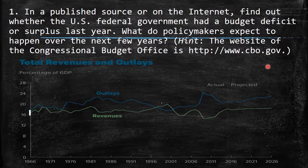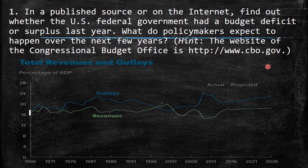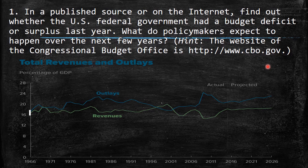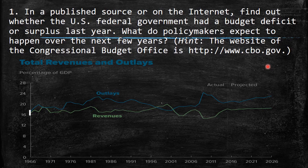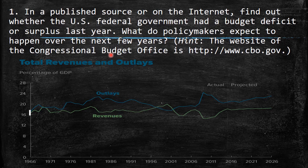The first question says: in a published source or on the internet, find out whether the United States federal government had a budget deficit or surplus last year. What do policymakers expect to happen over the next few years? They provide a hint — a specific website. I went to this website and you can find a nice graph called total revenues and outlays.